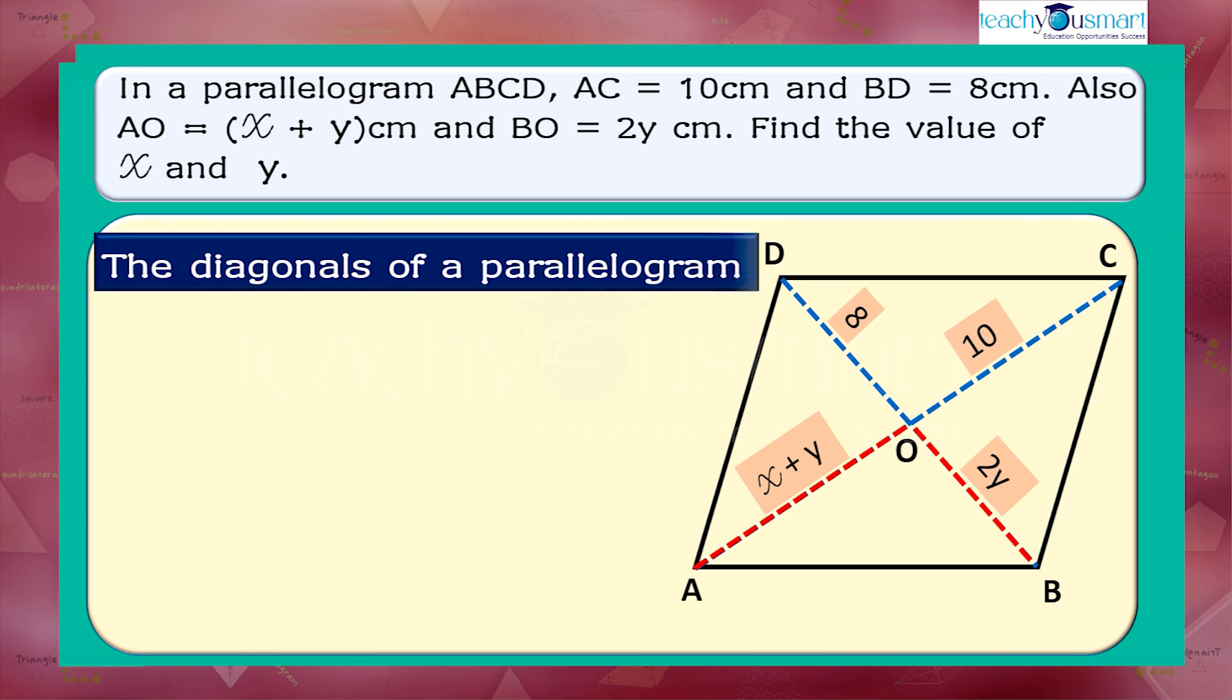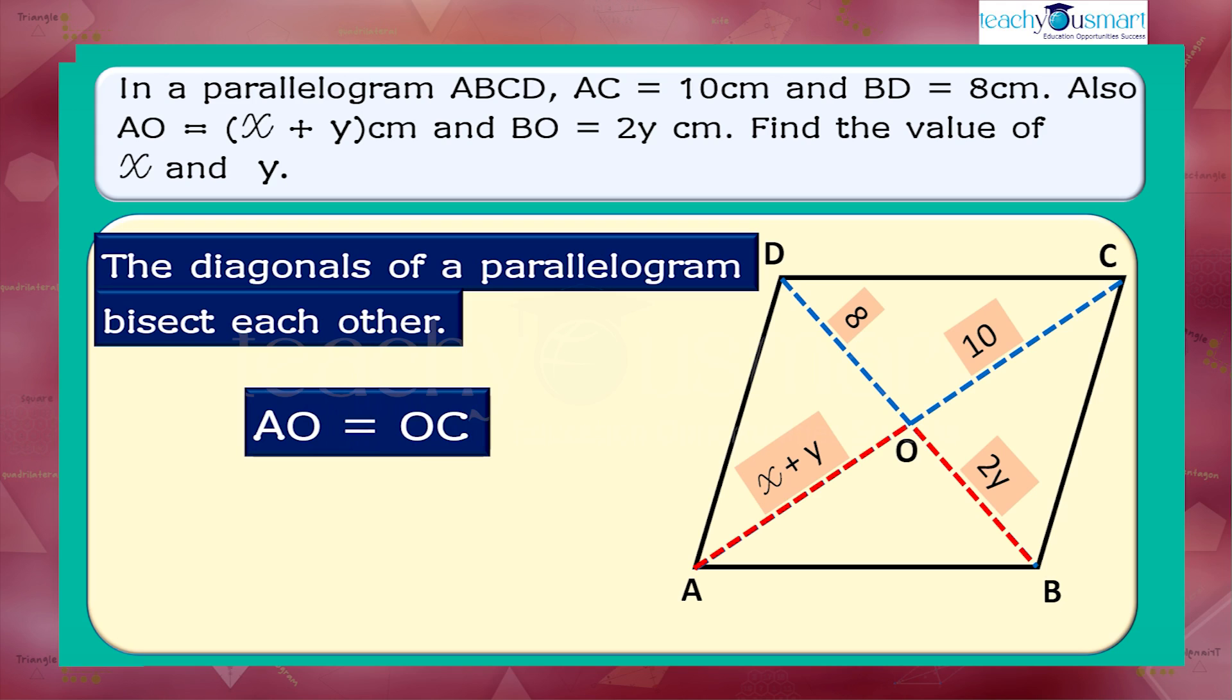The diagonals of a parallelogram bisect each other. That is, AO equals OC and BO equals OD.